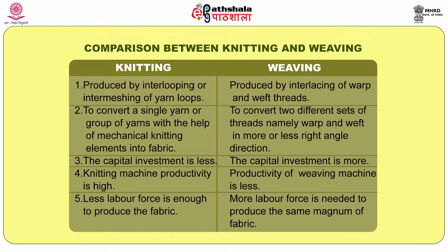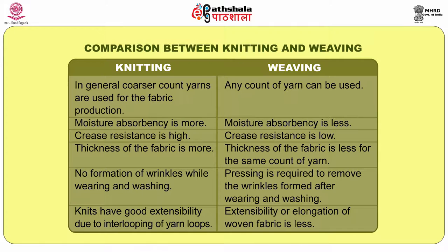Because of lower investment, the productivity of knitted fabric is high while the productivity of woven fabric is low. The workforce required is high in weaving and less in knitting. Coarser count yarn is most probably used for knitted fabric, while in weaving any kind of material — fine, coarse, or medium — can be used. Regarding fabric characteristics, knitting uses looping so the structure is open, whereas weaving uses interlacement making the structure very compact.